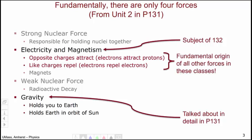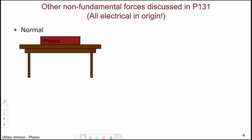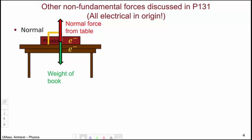It's worth pointing out that the idea of opposite charges attract and like charges repel is the fundamental origin of all of the other forces taught in these courses. For example, in 131 you discuss the normal force — when a physics book sits on a table, you have the weight of the book, but you also have a normal force from the table on the book which keeps it from falling through the table. This force is normal, i.e. perpendicular to the surface between the table and the book, and really arises because of the electrons in the table repelling the electrons in the book.